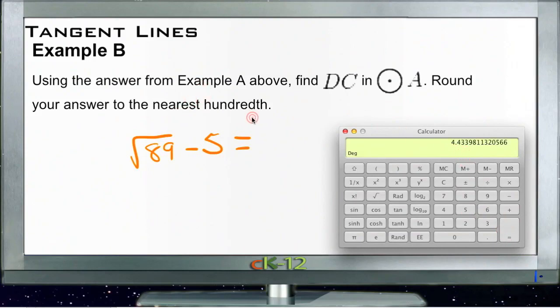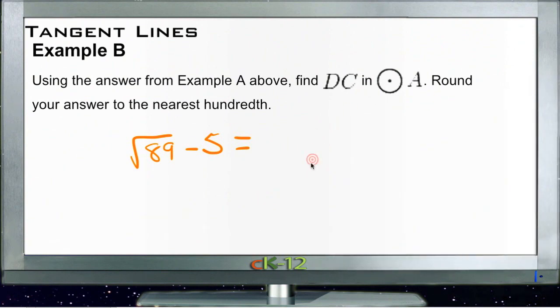And it says round your answer to the nearest hundredth. So that would be our first three right here. Since the number after it's also a three, we don't go up. So our answer would be 4.43. And that would be the side or the length of DC.